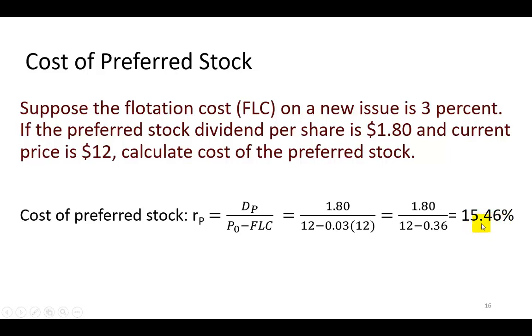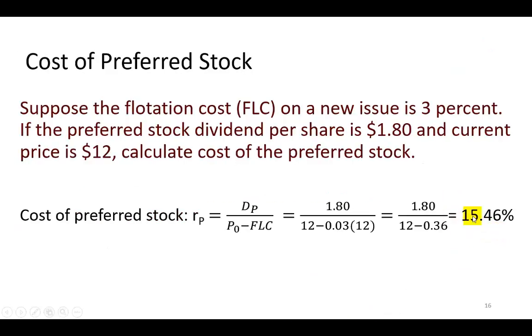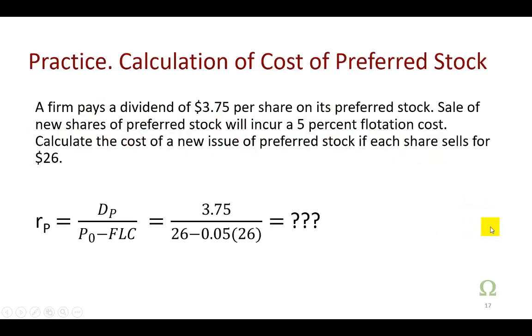So as you can see, quite expectedly, the inclusion of flotation cost raises the cost of preferred stock from 15% in this example to 15.46%. So that's all there is to it when it comes to the calculation of the cost of preferred stock.